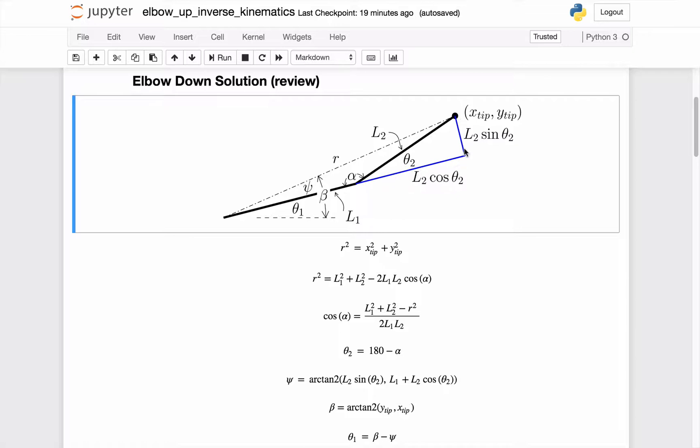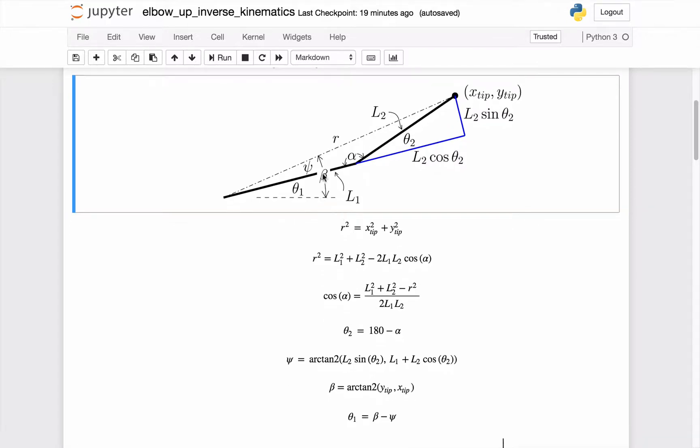And if I know theta-2, I can find these two blue sides, which then give me the opposite and adjacent sides for psi. And so I can find psi as the arctan-2 of L-2 sine theta-2 comma L-2 cosine theta-2 plus L-1. So this is the adjacent side, this is the opposite side, arctan-2 done. I can also then find beta because I know x-tip and y-tip. So that's also an arctan-2 y comma x. And then knowing beta and psi, I can find the elbow-down theta-1.